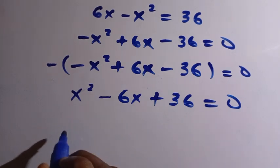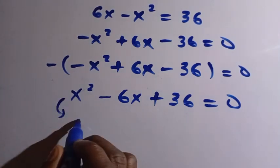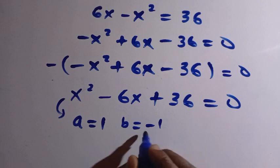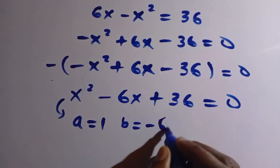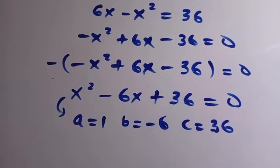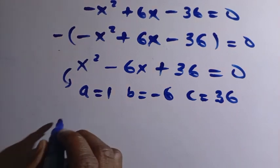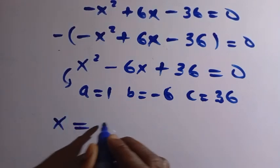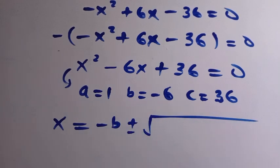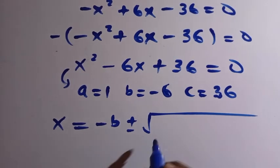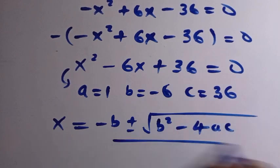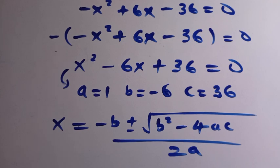We identify the coefficients: the coefficient of x squared is a, and here a equals 1. The coefficient of x is b, and that is minus 6. The constant value is c, and we have c equals 36. So let's write out the quadratic formula: x equals minus b plus or minus the square root of b squared minus 4ac, divided by 2a.